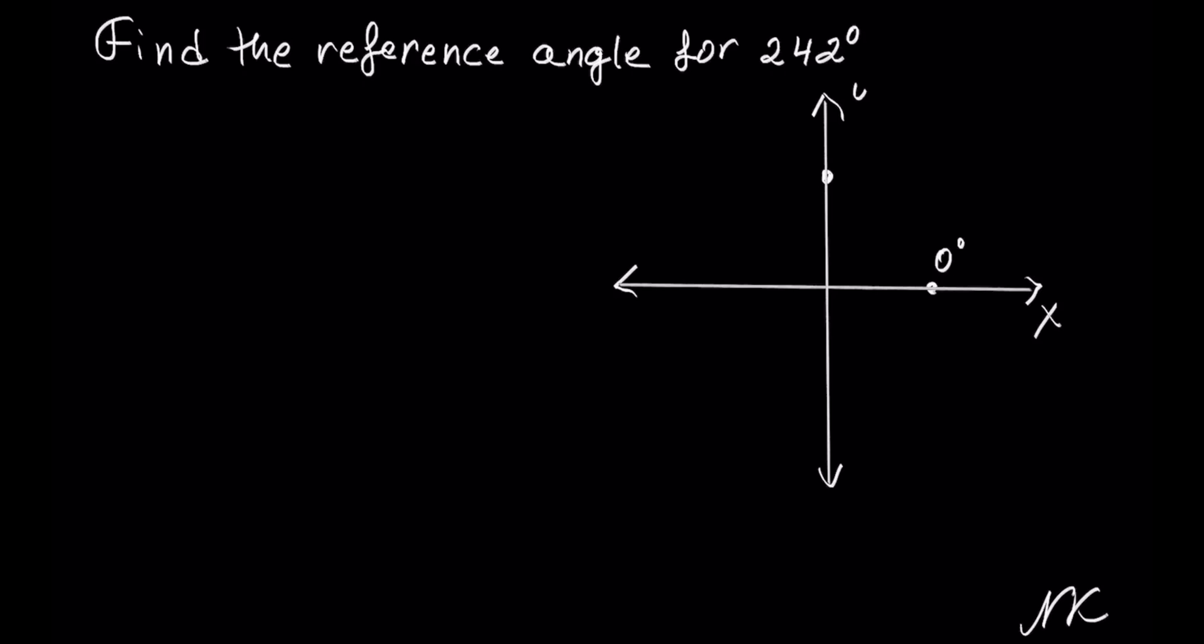On the positive y-axis we have 90 degrees, on the negative x-axis we have 180 degrees, and on the negative y-axis we have 270 degrees. We can stop here because 242 will fall somewhere between 180 degrees and 270 degrees.